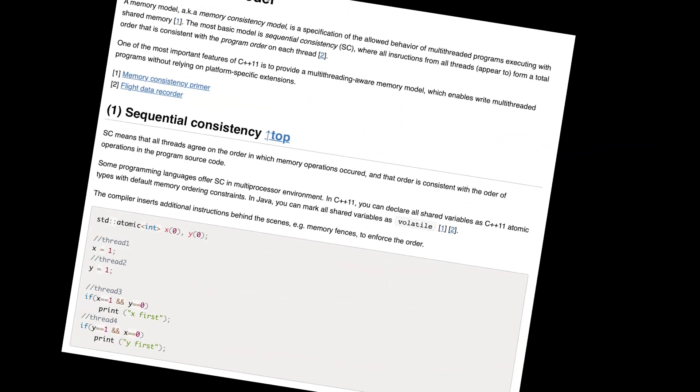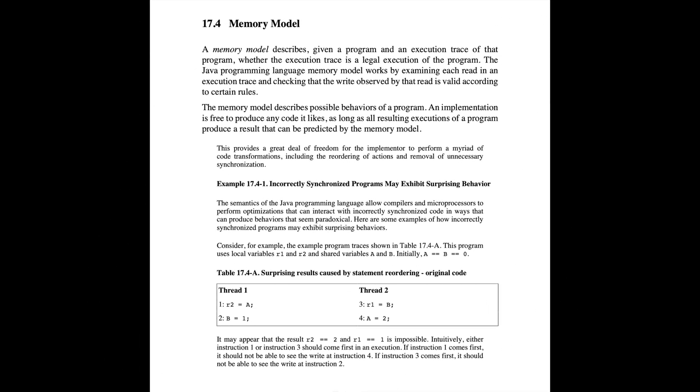That's why language memory models like C++11 memory model or Java memory model exist. They define what ordering guarantees the language gives you, but they also expect you to use the right synchronization tools to enforce those guarantees.